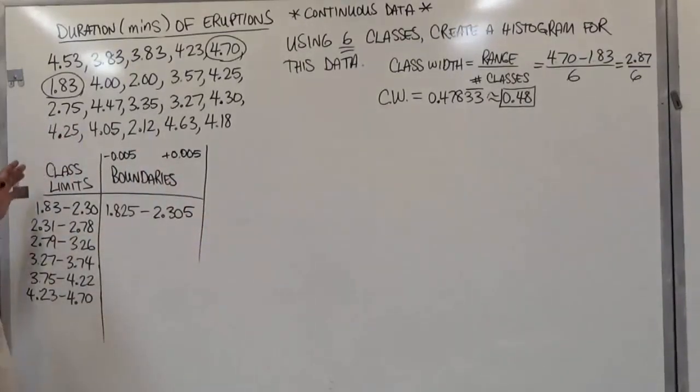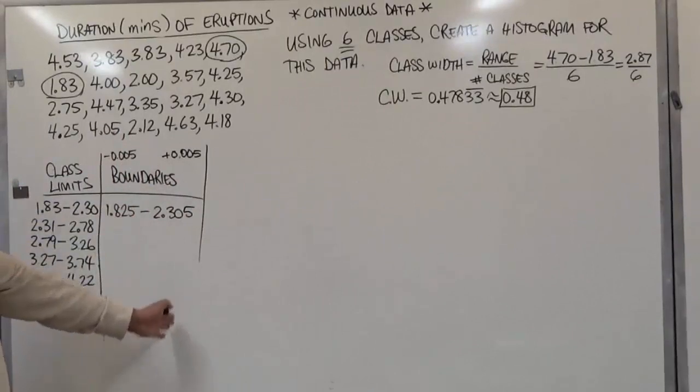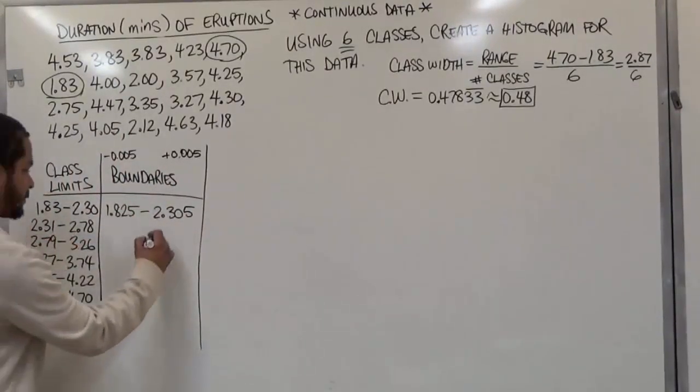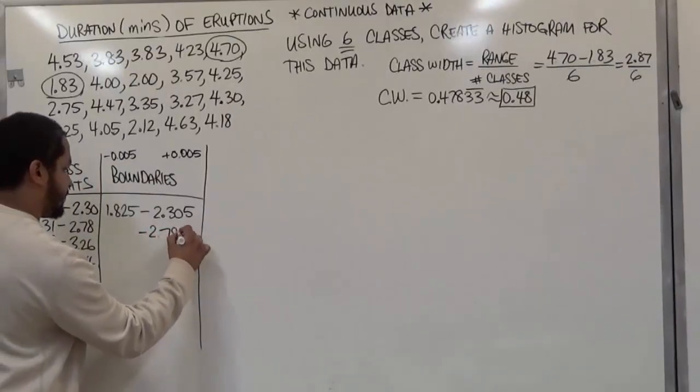The right side is always easier to make than the left, so I'm just going to go ahead and insert all those limits on the right side. From boundaries on this number, I just add 2.785.